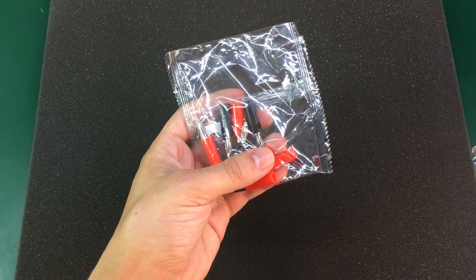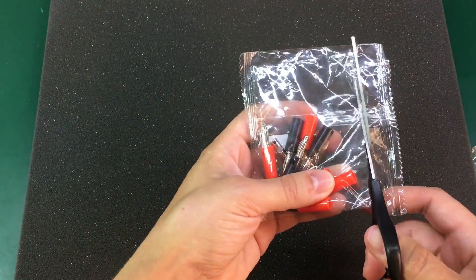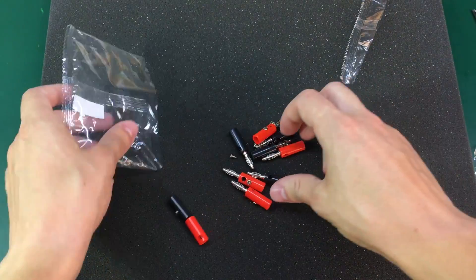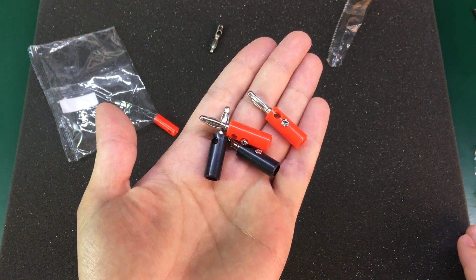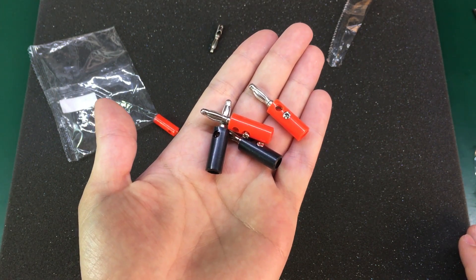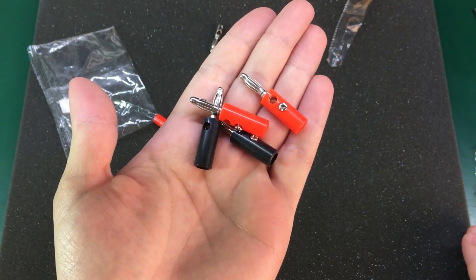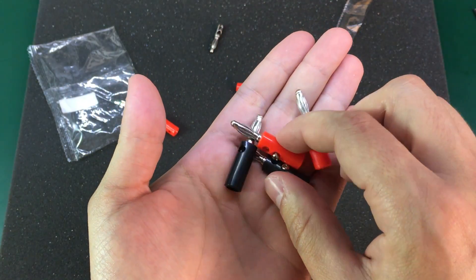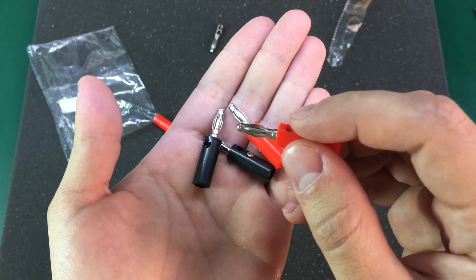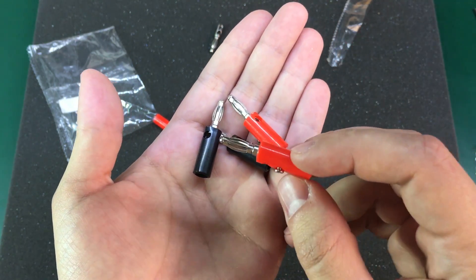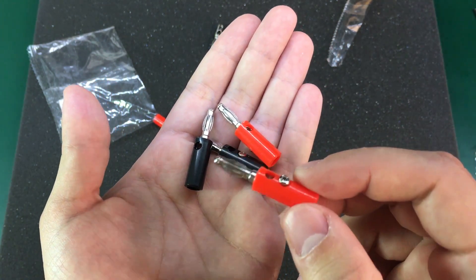Next I have a set of 10 pieces 4mm banana plugs. These are the low cost version which are only good for low voltage DC. Let's say up to 30 volts. That is because they don't offer good isolation.